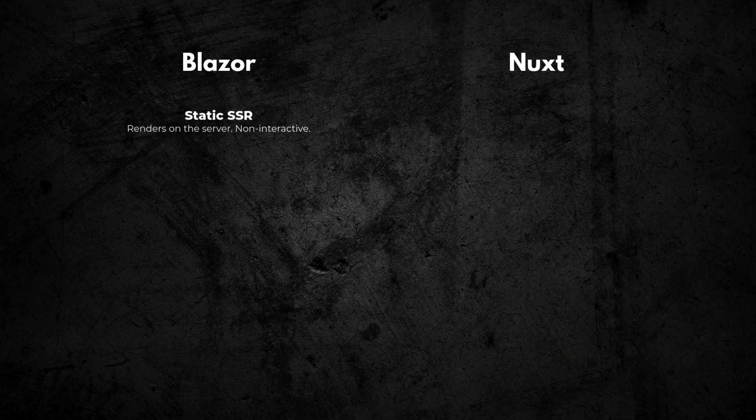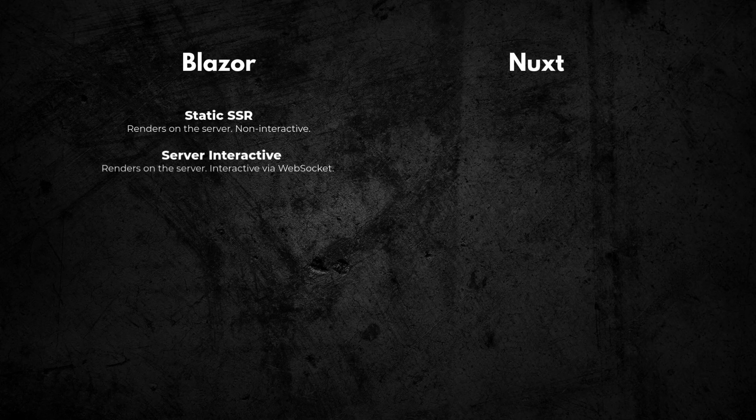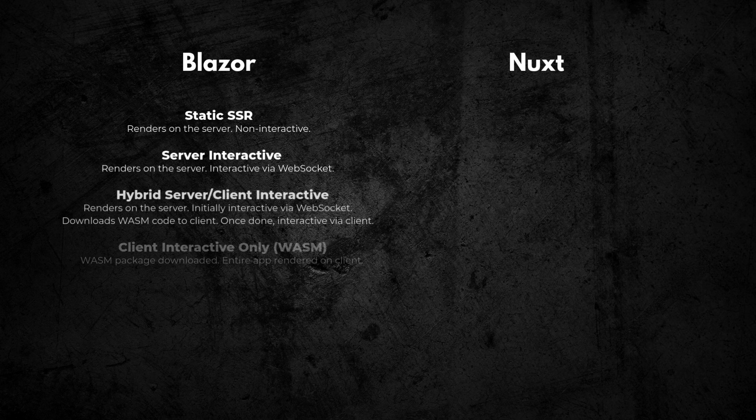Let's talk rendering modes — we have similar options but the implementation is a little different. Blazor can be static, server-rendered like a PHP or Rails application. You can go a step further and enable WebSocket-based interactivity, giving you a client-like experience with HTML still rendered on the server. You can also go hybrid where some of the page uses WebSocket interactivity and some is client-only WebAssembly. That's called hybrid mode, and especially with state management it can get out of hand.